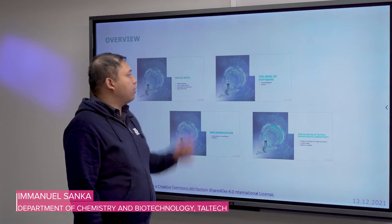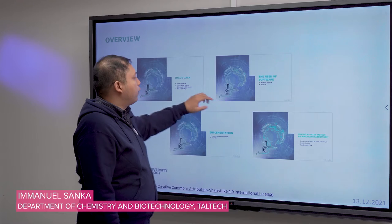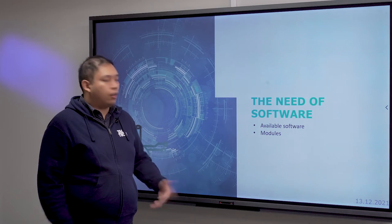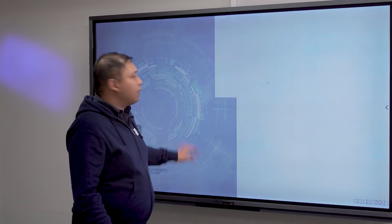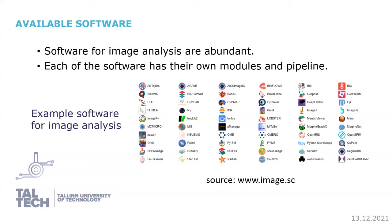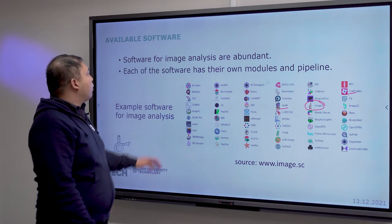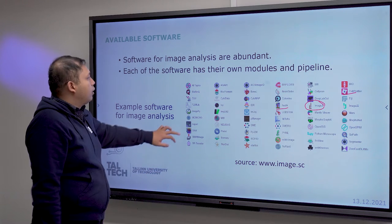Continuing to the second part, this section covers the need for software and the available options. There are many software tools for image analysis, and the ones commonly used include ImageJ, which has been around for a while, as well as Elastix and CellProfiler. Each software has its own modules and pipelines.